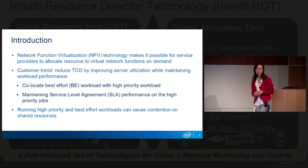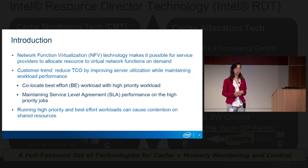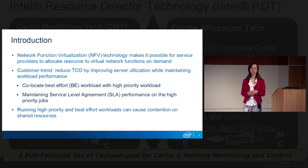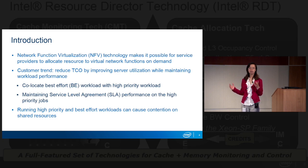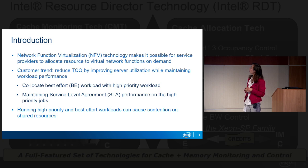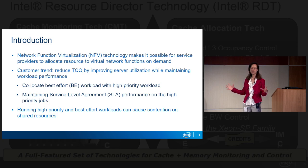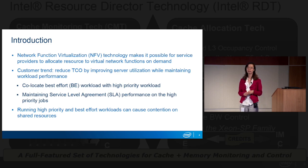Network function virtualization technology has attracted tremendous interest from the telecommunication industry as well as data centers, because they can assign shared resources for virtual network functions on demand. To further improve server utilization, service providers can deploy best-effort workloads whenever high-priority VNF workloads have low resource utilization. However, running both causes contention in shared resources, which can affect the performance of high-priority applications.